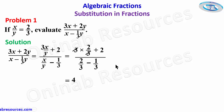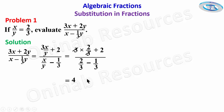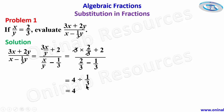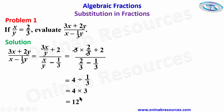For the denominator, we have 2 over 3 minus 1 over 3, and that gives us 1 over 3. So we have 4 divided by 1 over 3, which gives 4 times 3. And 4 times 3 gives 12.